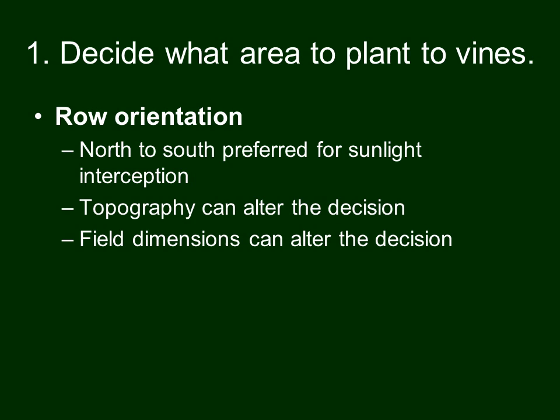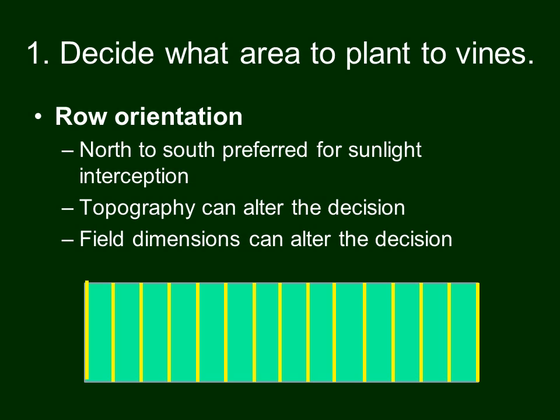Field dimensions can also alter the decision on row orientation. Here's a schematic showing a vineyard where up and down the page is north-south. If you insisted on that orientation, can you imagine going down those rows with your tractor? You'd be spending half your time just turning around at the ends of the rows. So it may make sense in this case to plant the vineyard east to west so that you have long rows you can work more efficiently.